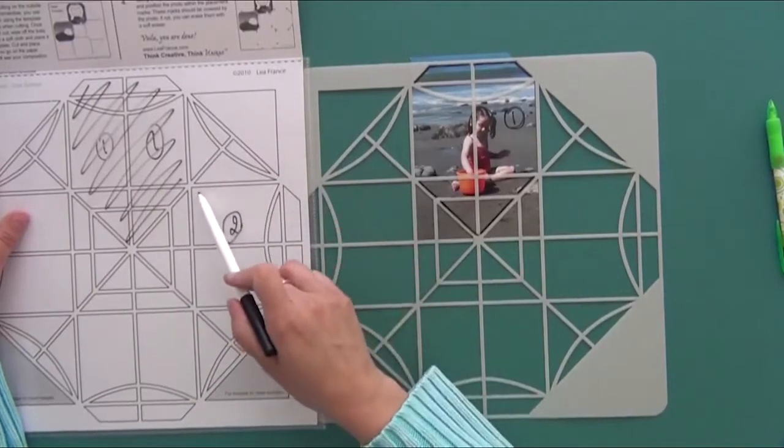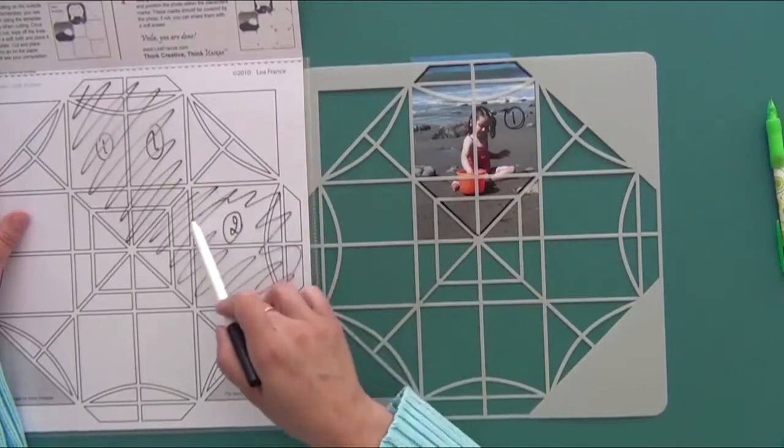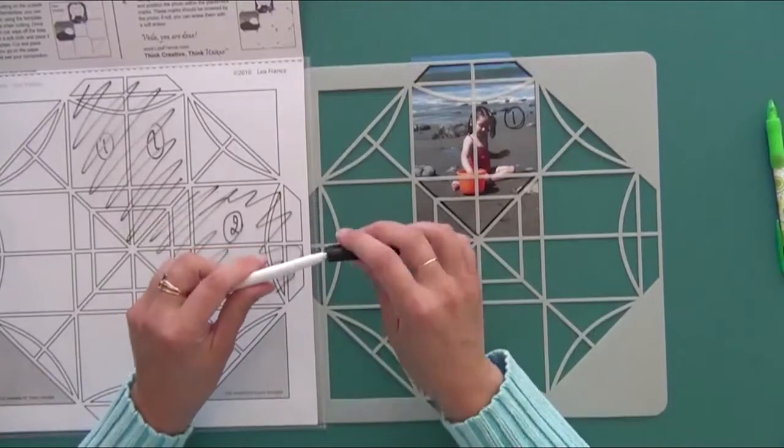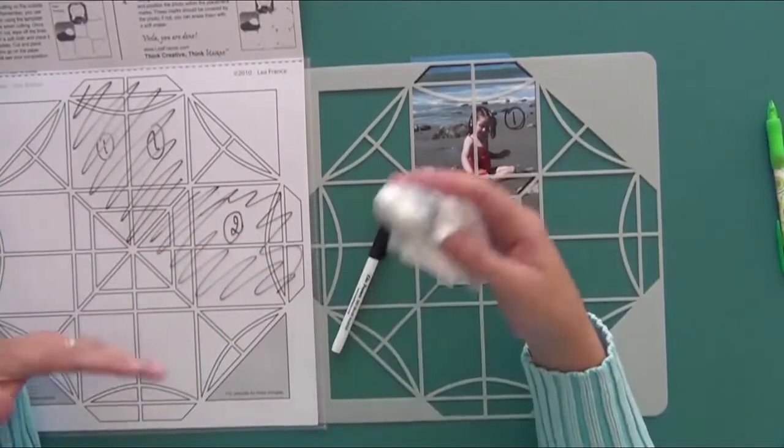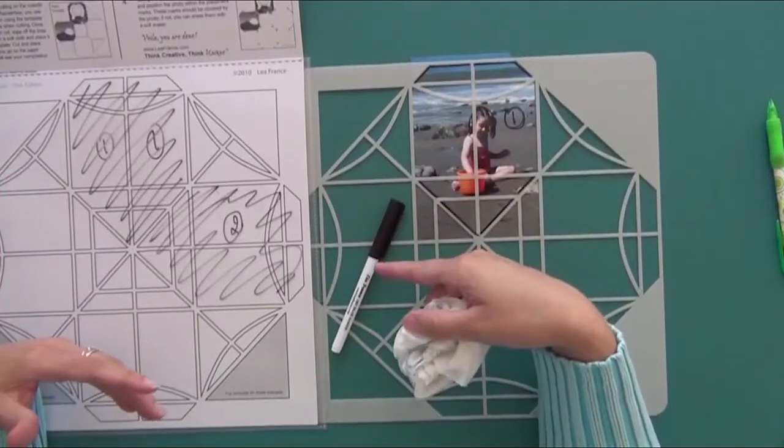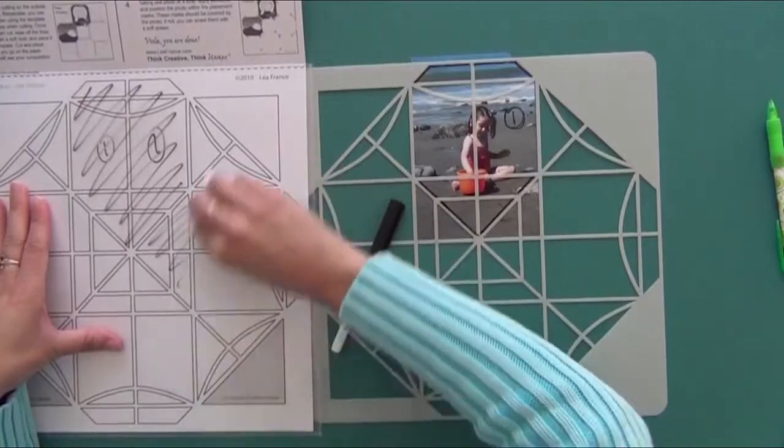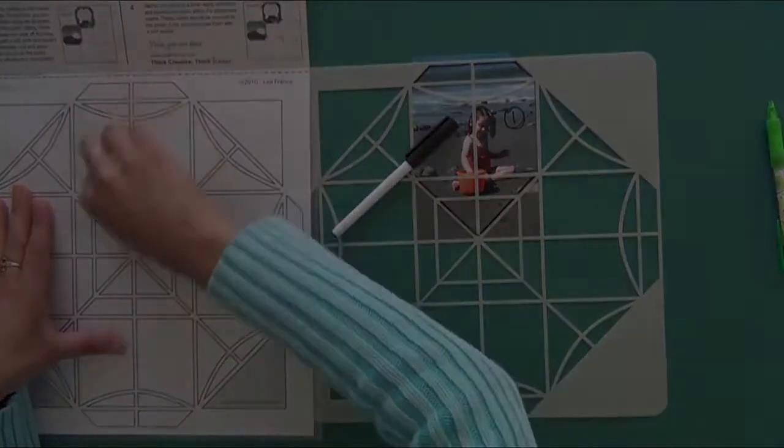For example, if I have another photo here, I write number two and I know I'm going to fill that space. The good thing about it is you use the dry erase marker all the time and you don't have to switch from the dry erase marker to the pencil. At the end also, it's really easy to erase your layout for the next time.